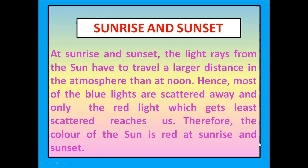I will explain why the sun appears red during morning and evening. At sunrise and sunset, the light rays from the sun have to travel a larger distance in the atmosphere than at noon. Hence, most of the blue light is scattered away and the least scattered light reaches us. Therefore, the color of the sun is red at sunrise and sunset. During morning and evening, sunlight travels a larger distance, so most blue light is scattered away and only red light reaches us.